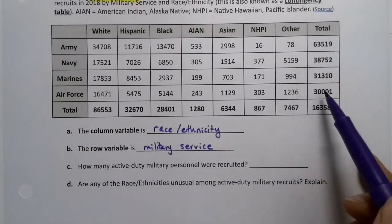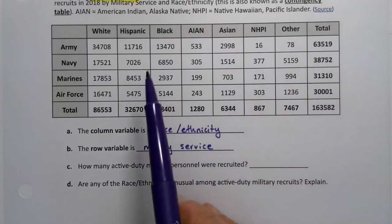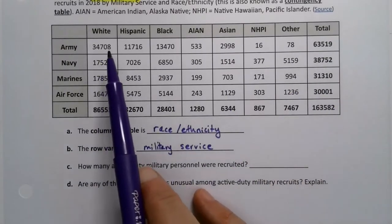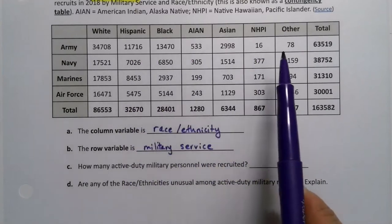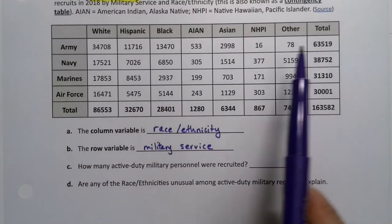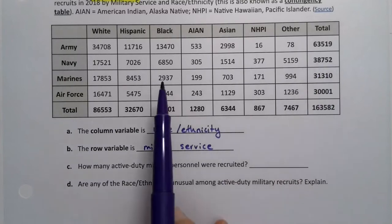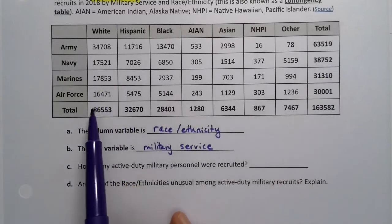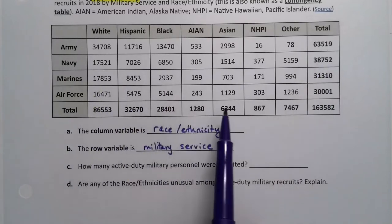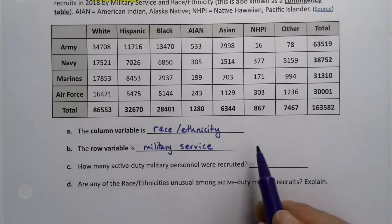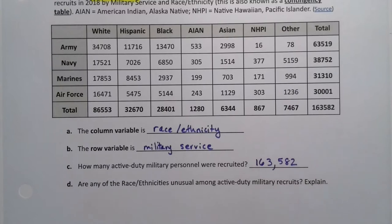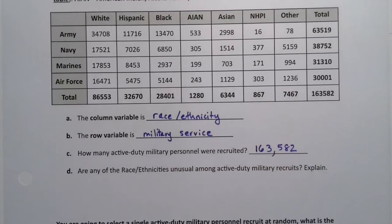The row variable is military service. Now, I found the totals for us because I knew this would just be a pain, but keep in mind what's happening here. We're adding up the whole row of army, and that gets us this total right here. Then the whole row of navy, that gets us this total, and so on. Similarly, we're adding up the whole row of white, that gets us here, and so on. Okay, so how many were recruited to all together is 163,582 individuals in 2018.